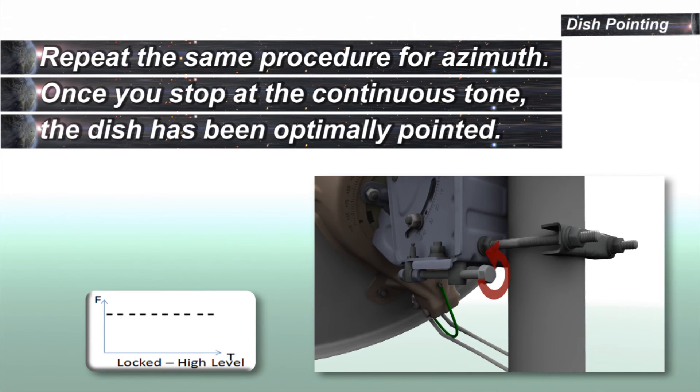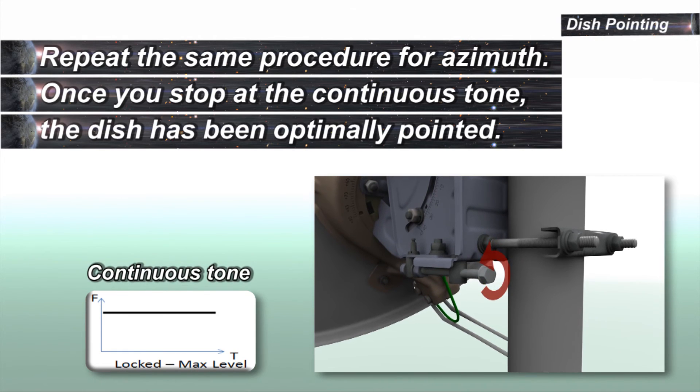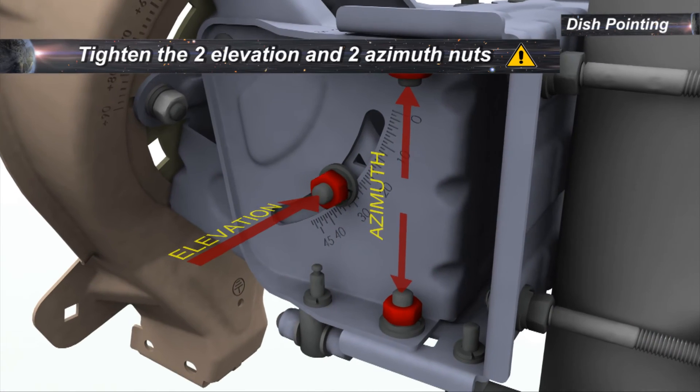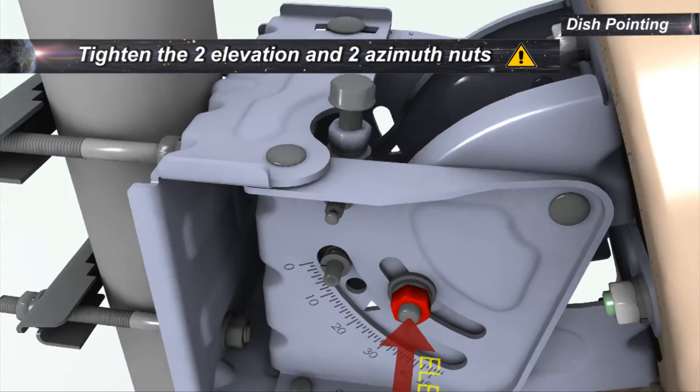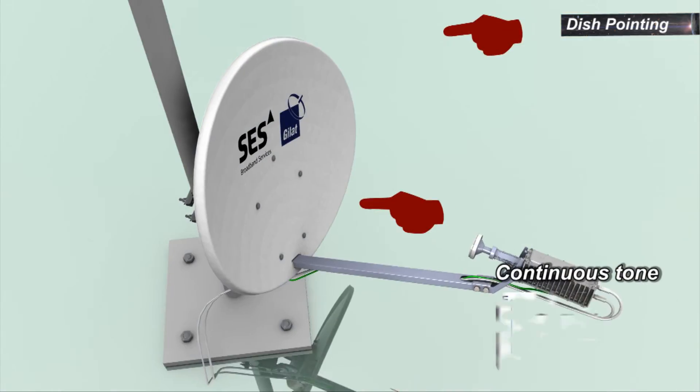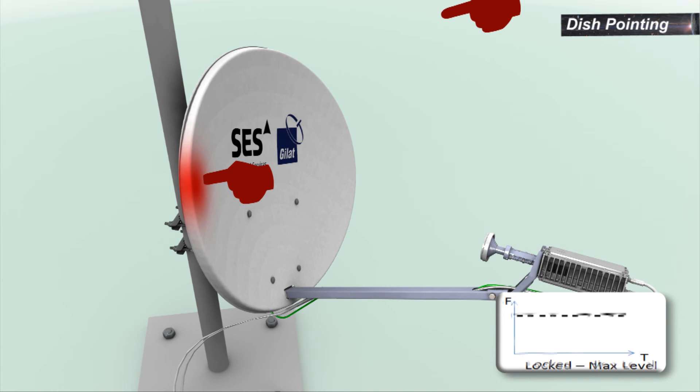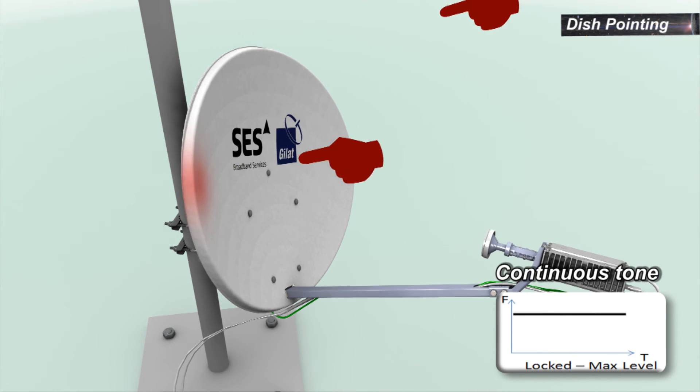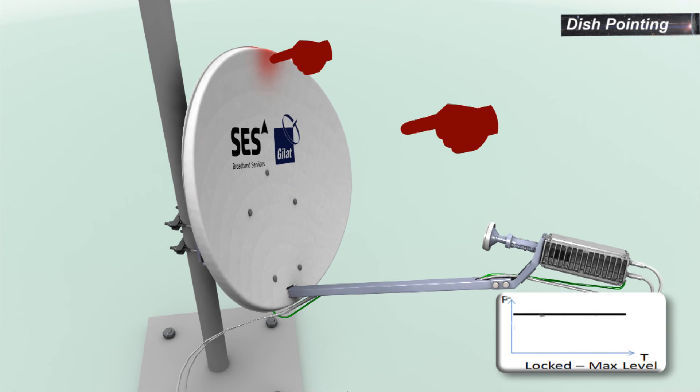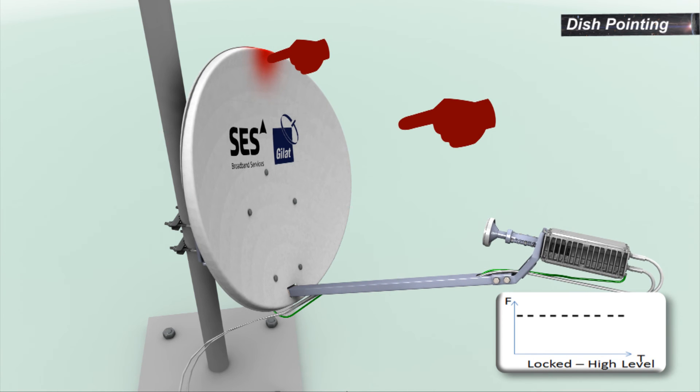Once you stop the continuous tone, the dish has been optimally pointed. Tighten the nuts, retaining the azimuth and elevation. Apply light pressure on the side and top of the assembly until the tone changes to a staggering tone. Verify that once you let go, the tone returns to peak tone.